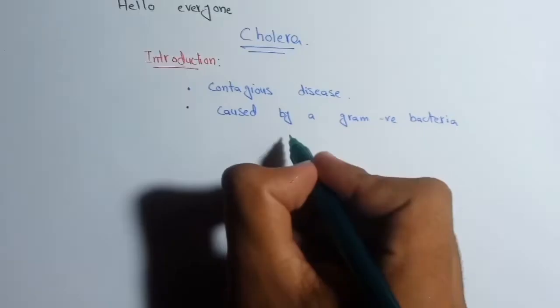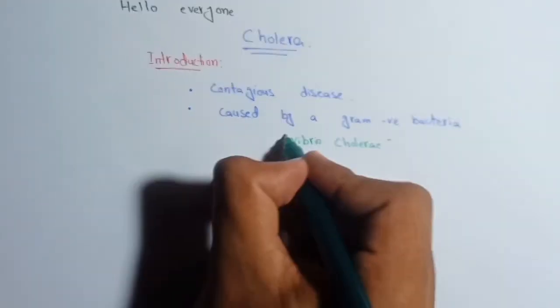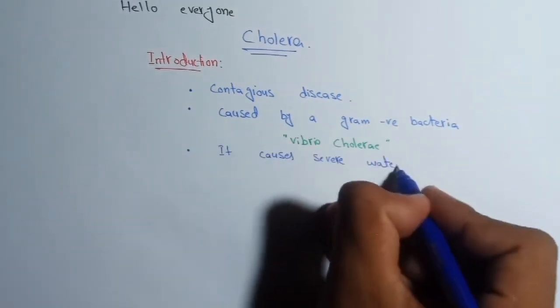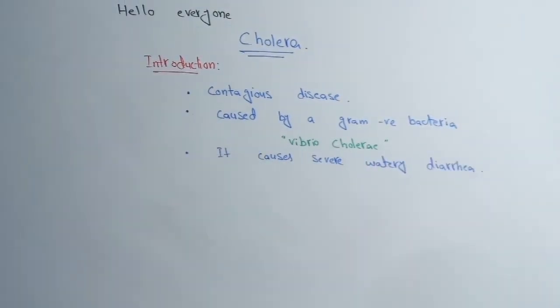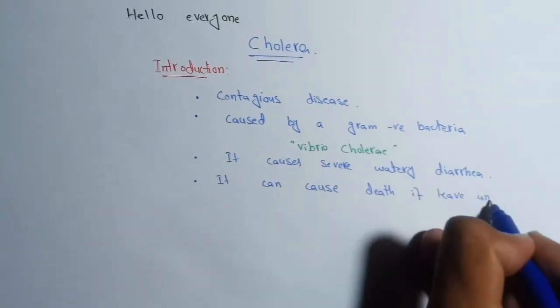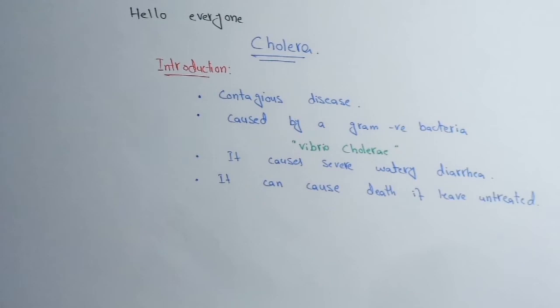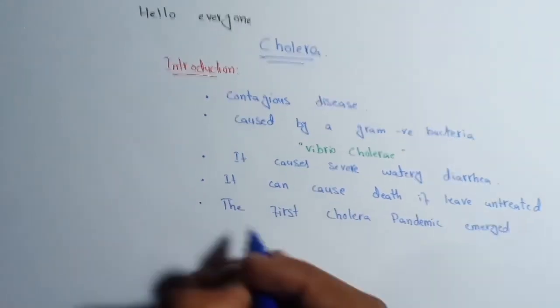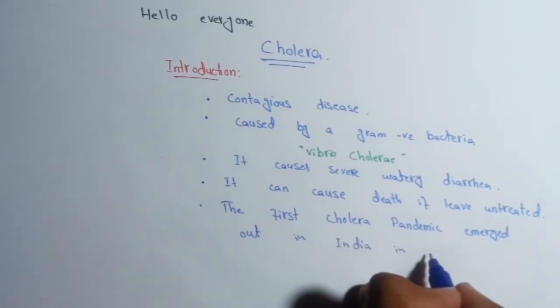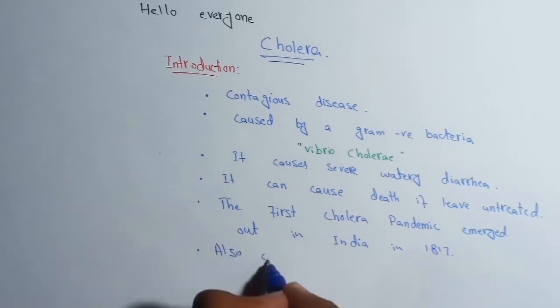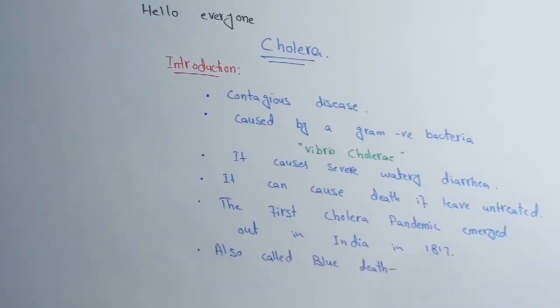It is caused by a gram-negative bacteria Vibrio cholerae. It causes severe watery diarrhea and can cause even death if left untreated. The first cholera pandemic emerged in India in 1817. An interesting thing about cholera is that it is also called 'blue death' because the patient's skin turns blue due to severe dehydration.